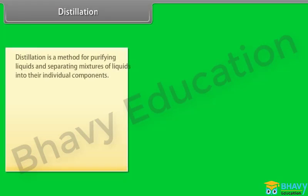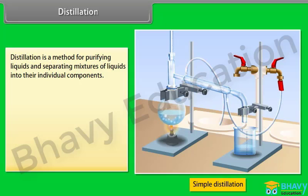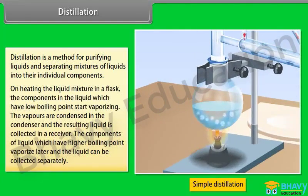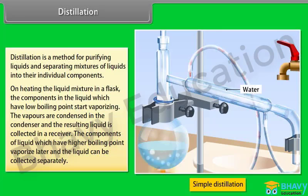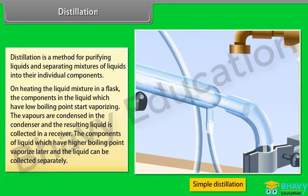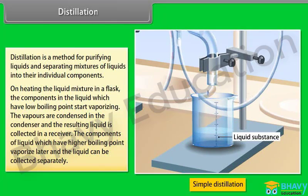Distillation: Distillation is a method for purifying liquids and separating mixtures of liquids into their individual components. On heating the liquid mixture in a flask, the components with low boiling point start vaporizing. The vapors are condensed in the condenser and the resulting liquid is collected in a receiver. Components with higher boiling point vaporize later and can be collected separately.